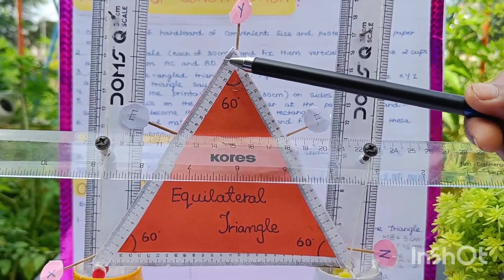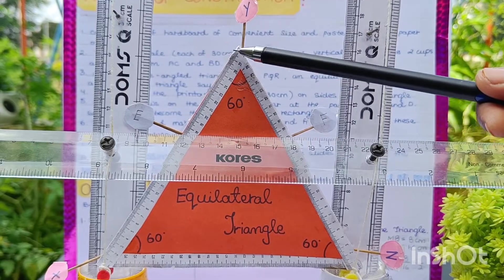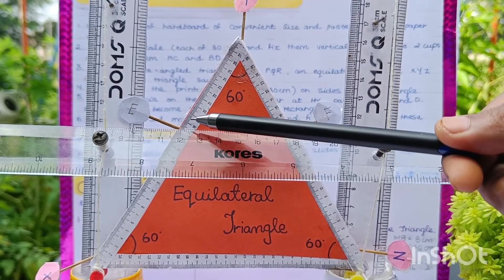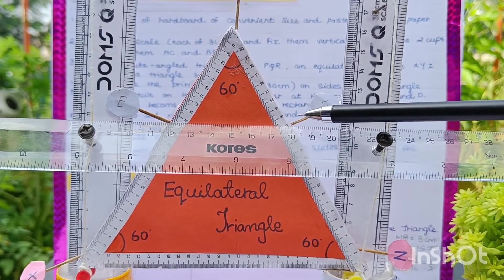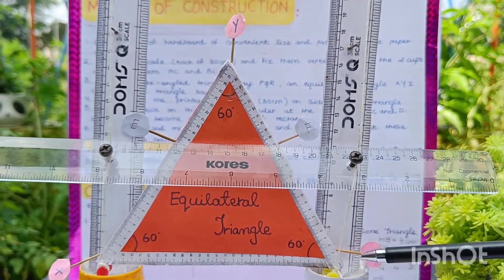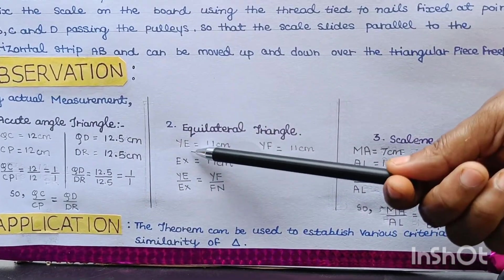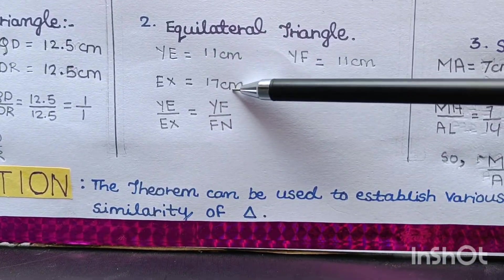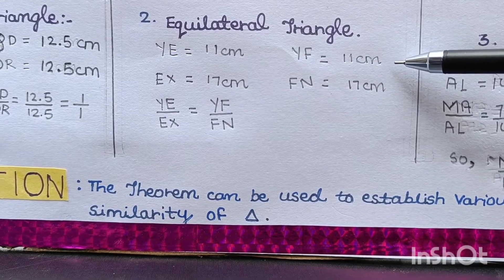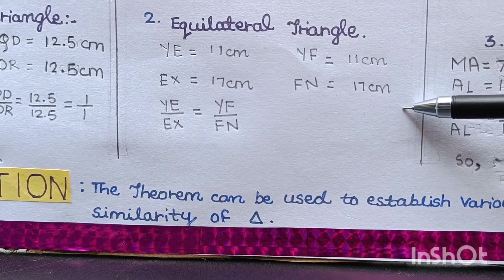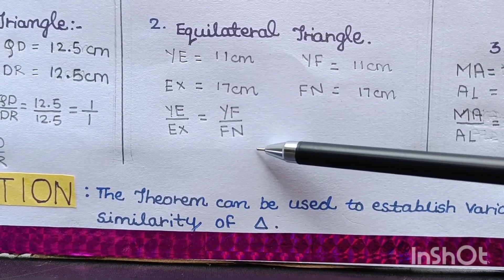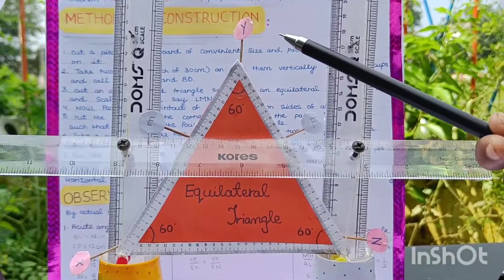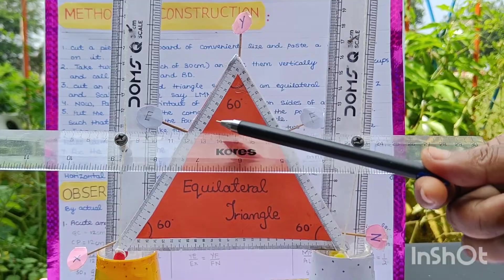We take points E and F on the triangle, with the line intersecting YX at E and YZ at F. On measuring, YE is equal to 11 cm and EX is equal to 17 cm. This shows that YE upon EX is equal to YF upon FZ, confirming that the other two sides are divided in the same ratio.